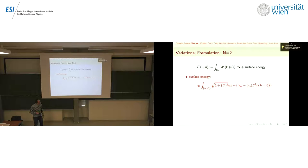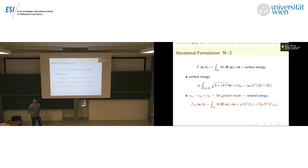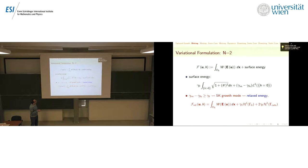This is the global energy. When you start doing calculus of variation, we are interested in finding equilibrium solutions — minimizing over u and h, where the domain h is moving. The first observation is that if the constant gamma_vs minus gamma_fs is bigger than gamma_f, this energy is not lower-semicontinuous, so you don't have existence of a minimizer. There are no equilibrium solutions in this case.